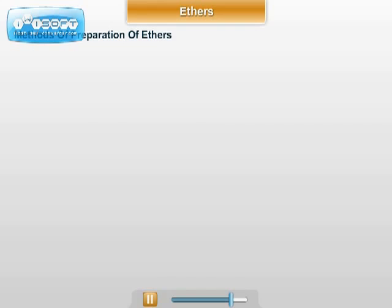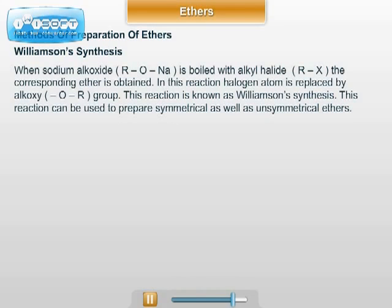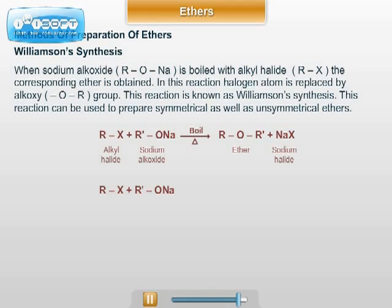Next are methods of preparation of ethers. Number one: Williamson's synthesis. When sodium alkoxide (R-O-Na) is boiled with alkyl halide (R-X), the corresponding ether is obtained. In this reaction, the halogen atom is replaced by the alkoxy (O-R) group. This reaction is known as Williamson synthesis and can be used to prepare symmetrical as well as unsymmetrical ethers. The general reaction: R-X (alkyl halide) + R-O-Na (sodium alkoxide) → R-O-R (ether, simple or mixed) + NaX (sodium halide) as a by-product.